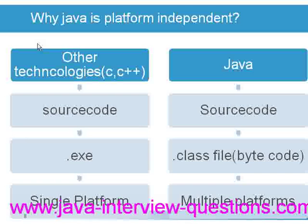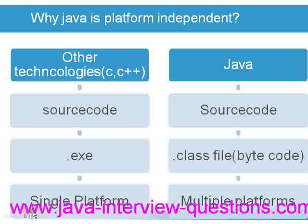In a traditional programming language such as C or C++, when a source code is compiled, it generates a .exe file. This .exe file will not run on multiple platforms. For example, if the source code is compiled in a Windows environment, it will run only in Windows. If compiled in Linux, it runs only in Linux. So the .exe file runs only on a single platform — this is the major drawback of technologies like C and C++.